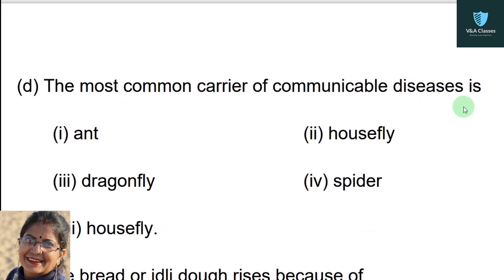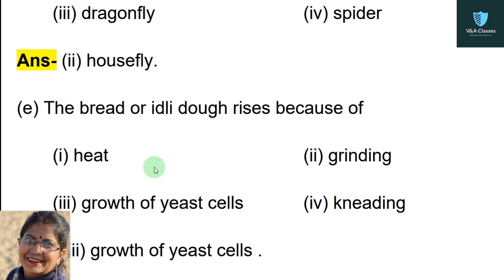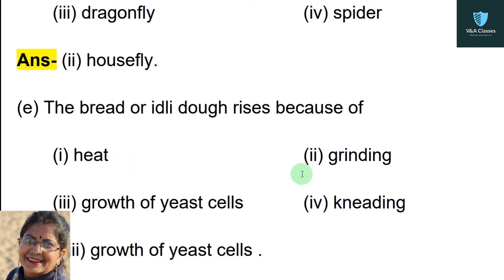Next question: the most common carrier of communicable diseases is — first option ant, second option house fly, third option dragonfly, fourth option spider. Correct option is house fly.